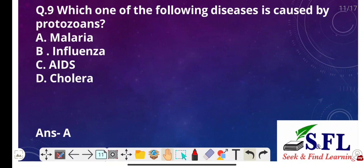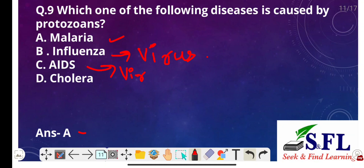Question number nine: Which of the following diseases is caused by protozoans? The options are malaria, influenza, AIDS, and cholera. The correct answer is option A — malaria. Influenza is caused by a virus — it is caused by infection of the respiratory tract with the influenza virus. AIDS stands for Acquired Immunodeficiency Syndrome and is also caused by a virus. Cholera is an acute diarrheal illness caused by Vibrio cholerae, a bacterium.